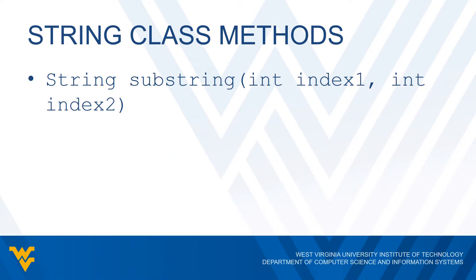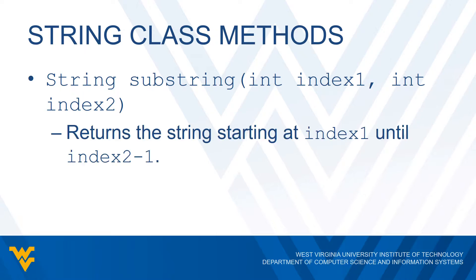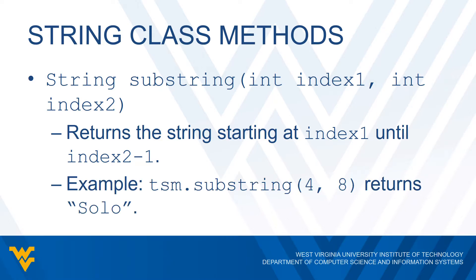There is a second version of the substring method where we pass two parameters instead of one. Index one works just like the index parameter in our previous method — that's going to be our starting point. The difference is this index two that we pass. We want to get all the characters between index one and up to but not including index two — or equivalently, up to and including index two minus one. They just decided the second parameter means we go up to but not include that index. So if we do TSM.substring(4, 8), the 4 corresponds to capital S, and 8 goes up to capital M, so this returns the substring 'solo'.